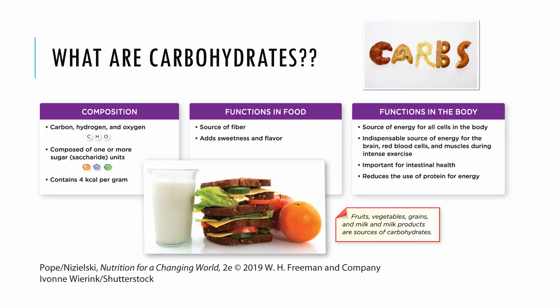Our brain, red blood cells, and muscles during exercise essentially really prefer blood glucose. Fiber especially is very important for our intestinal health. Carbohydrates can also spare the use of protein for energy, because our body can turn protein into glucose. It doesn't necessarily like to do that, but it can, so sometimes if someone is eating a lot more protein, some protein may get turned into glucose.